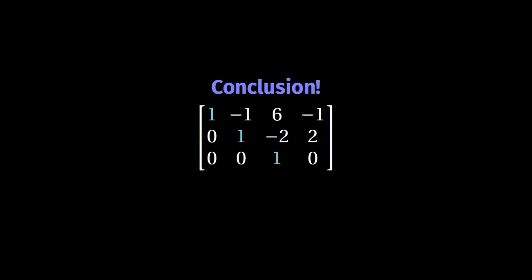If you want a unique row echelon matrix, then you need to work a bit more in order to obtain a reduced row echelon matrix. This is the object of the so-called Gauss-Jordan method, or Gauss-Jordan elimination, and will be discussed in the next video.